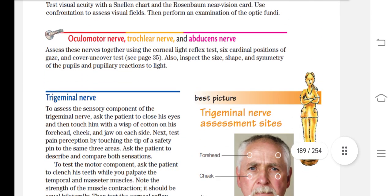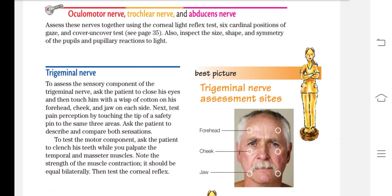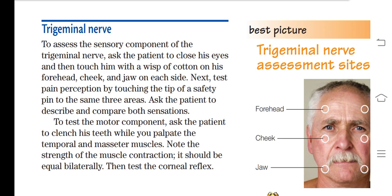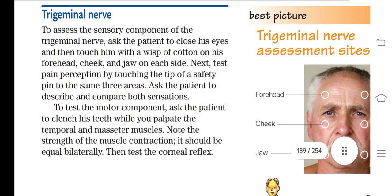Now we assess the trigeminal nerve — cranial nerve 5. To assess the sensory component, have the patient close their eyes. Apply cotton in three positions: forehead, cheek, and jaw. Ask the patient to tell you when they feel the touch. If sensation is present in all three areas, the sensory component of the trigeminal nerve is normal.